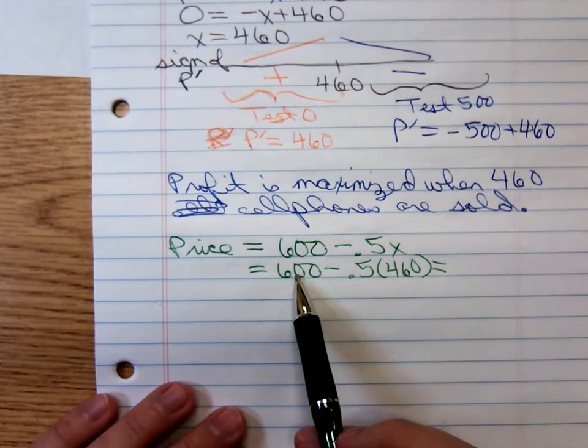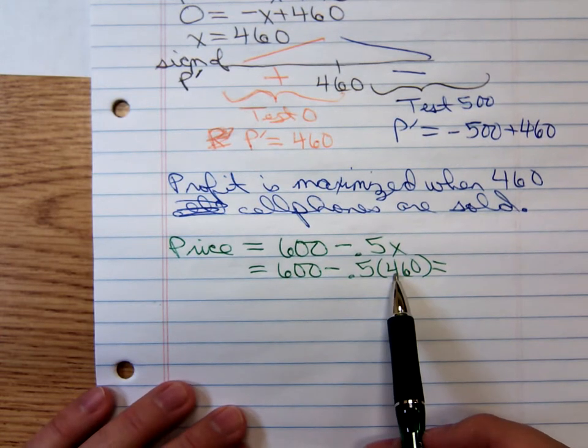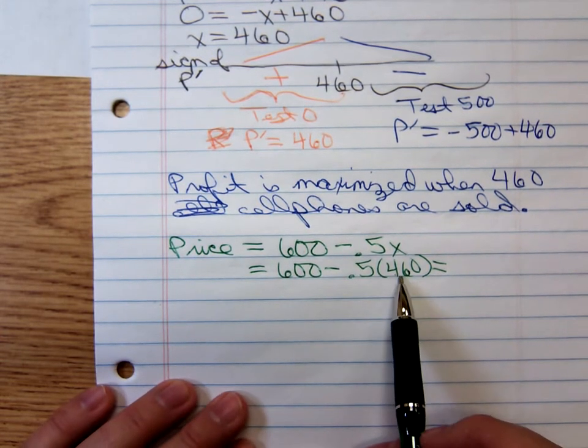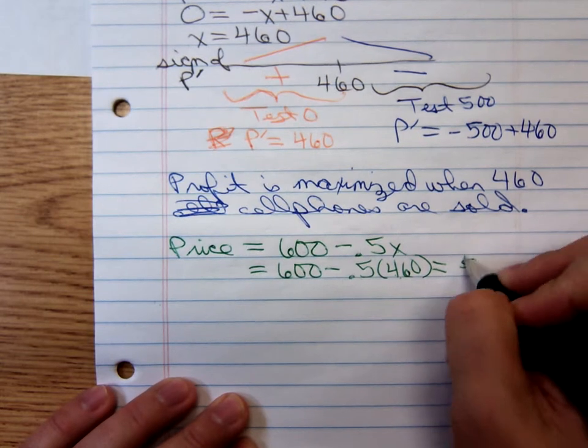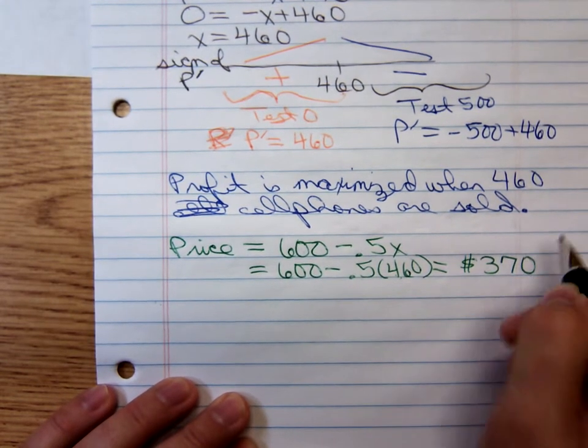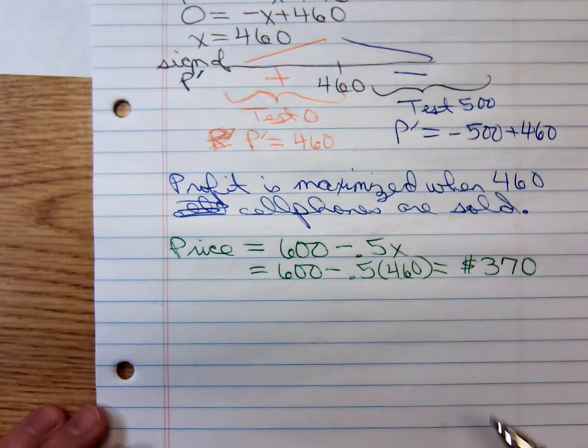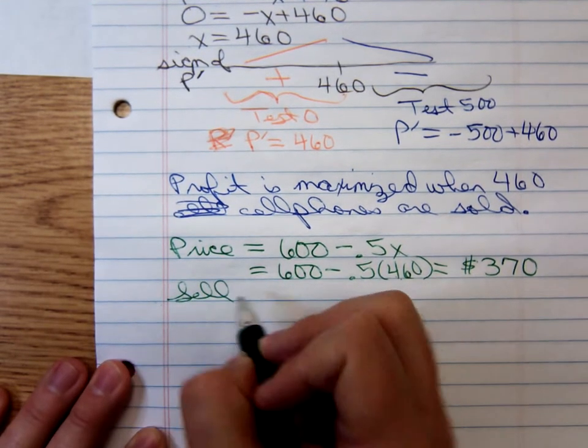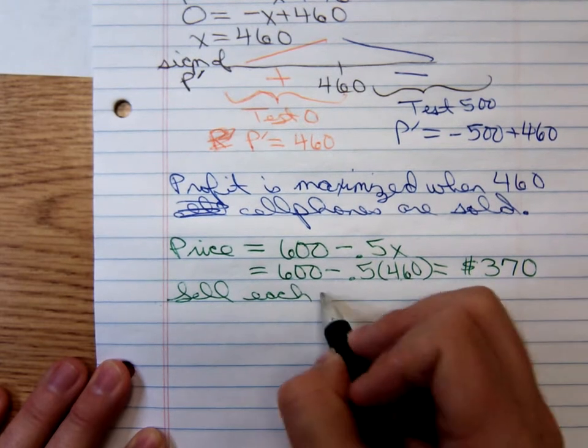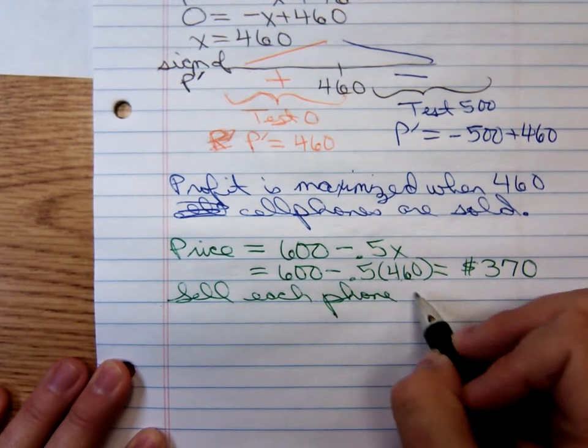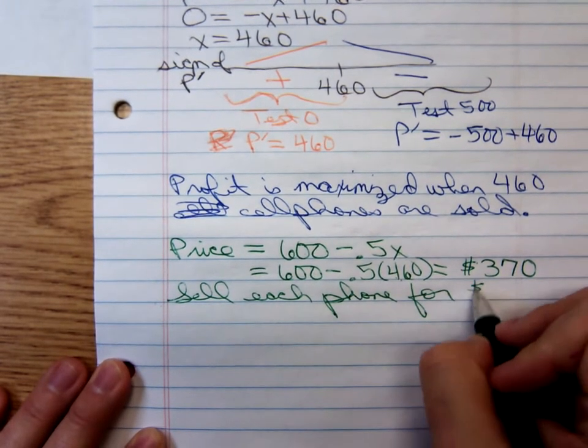So price is 600 minus 0.5x. We're plugging in the 460 cell phones. That's 600 minus 230, 600 minus 230, is that $370? So they should sell each phone for $370. I'll write, sell each phone for $370.